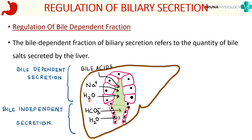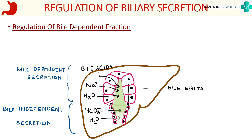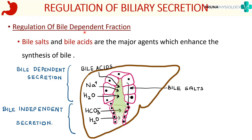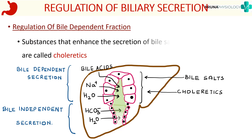The most important factor regulating the bile dependent fraction is bile salts and bile acids, which are the major agents that enhance the synthesis of bile. If there are more bile salts, there will be increased production of bile. Another factor that increases bile dependent secretion is substances that enhance the secretion of bile salts — these are called choleretics. So bile salts enhance bile secretion, and choleretics, which enhance secretion of bile salts, will also enhance bile secretion.